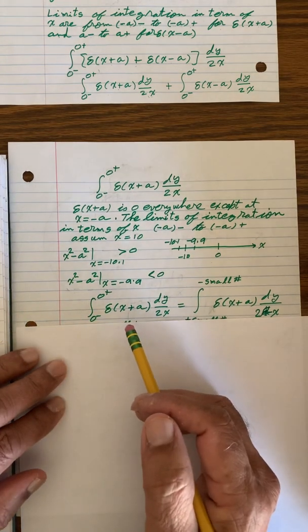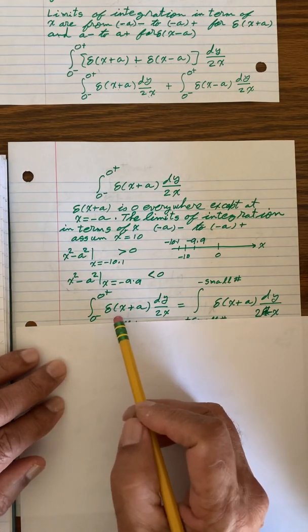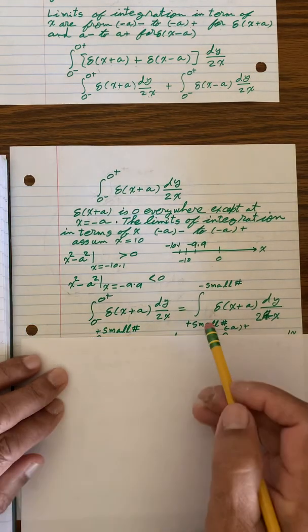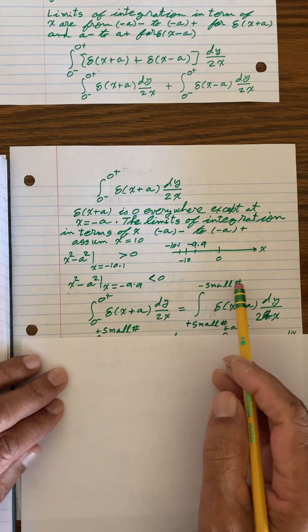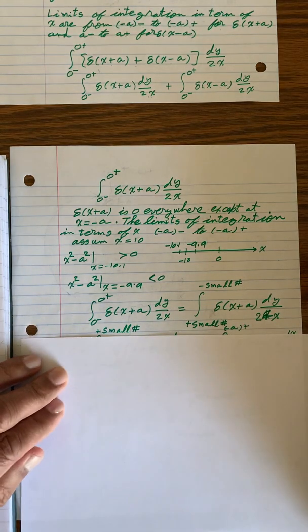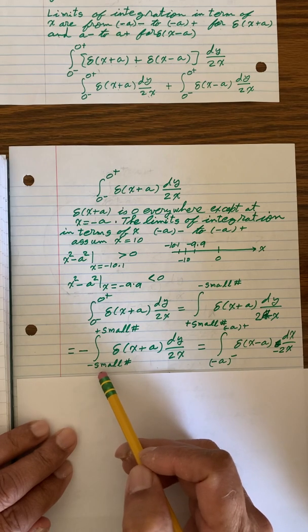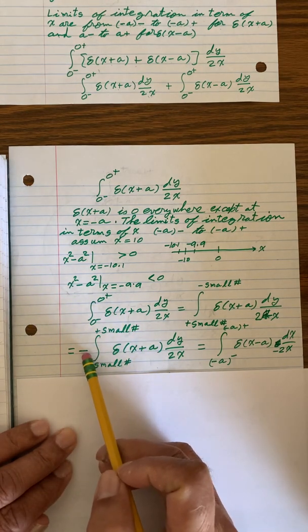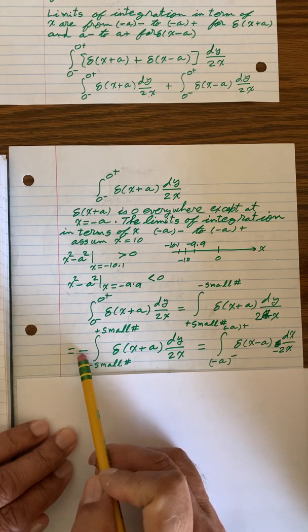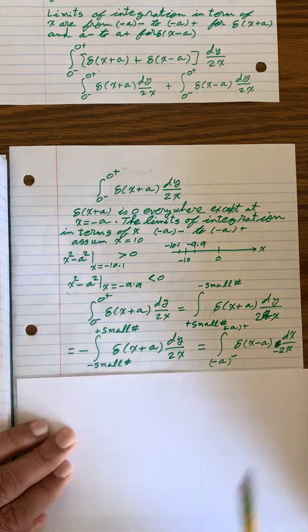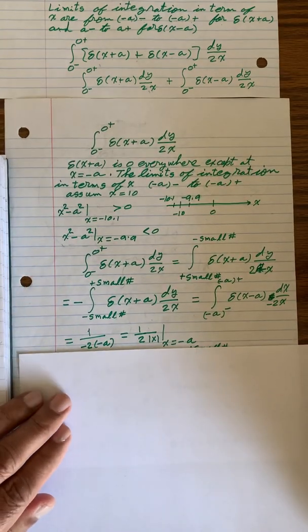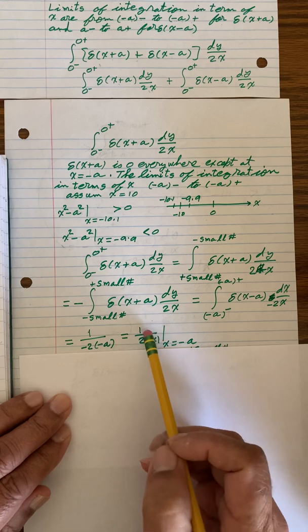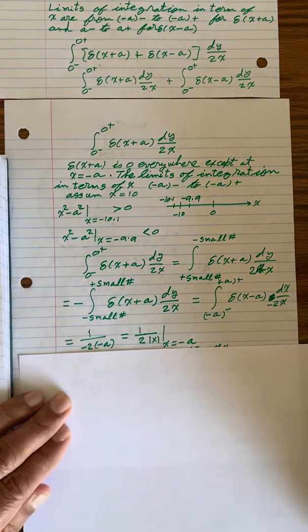the consequences of that is that these limits of integration are from a very small positive number to a very small negative number. What we like to do is have the limits from negative to the positive, and so we reverse that in the process that we have to change the signs. So this becomes a negative, and this one, we can write it like this. So this becomes the final value of that, 1 divided by 2a, that can be written as 1 divided by 2 absolute value of x at x equal to minus a.